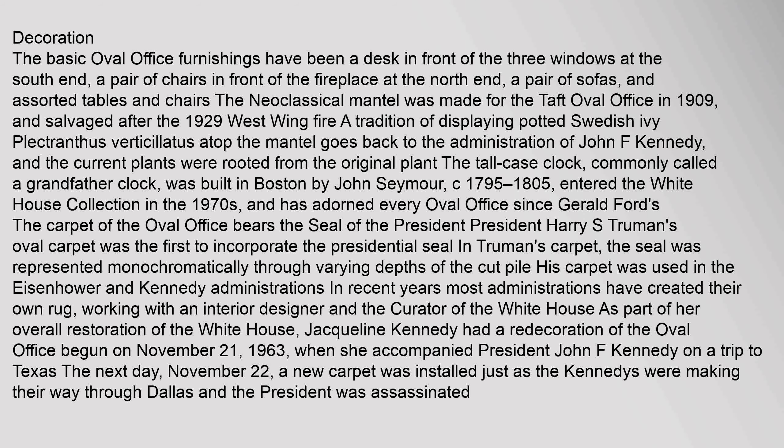The grandfather clock entered the White House collection in the 1970s and has adorned every Oval Office since Gerald Ford's. The carpet of the Oval Office bears the seal of the President. President Harry S. Truman's oval carpet was the first to incorporate the presidential seal. His carpet was used in the Eisenhower and Kennedy administrations. Jacqueline Kennedy had a redecoration of the Oval Office begun on November 21, 1963, when she accompanied President Kennedy on a trip to Texas. The next day, November 22, a new carpet was installed just as the Kennedys were making their way through Dallas and the President was assassinated.